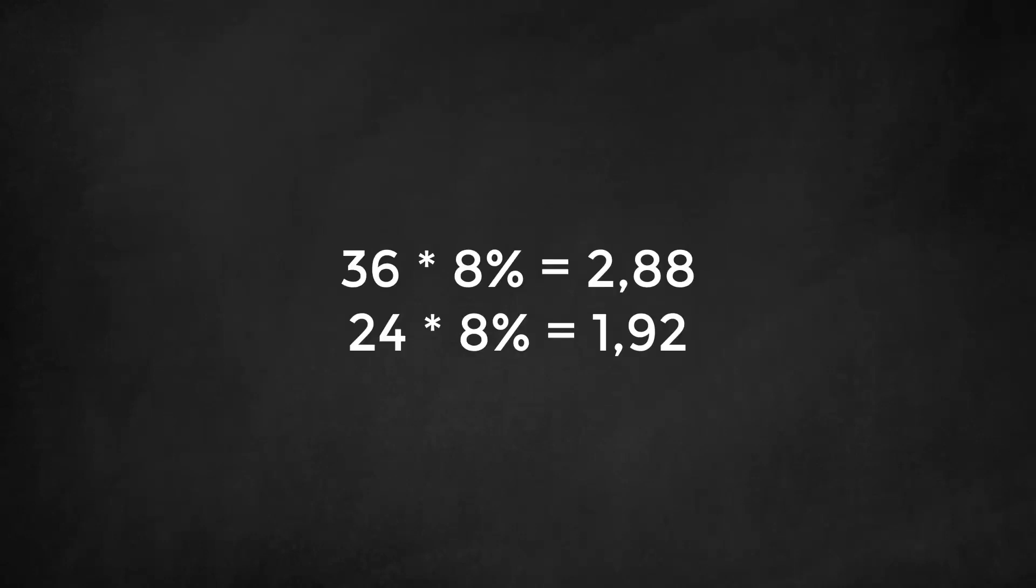The capital charge for the bank is a percentage against this sum and was set at 8% originally. So, the 36 and 24 found for our basic indicator and standardized approach would, at this 8% rate, lead to an actual capital claim of 2.88 and 1.92, respectively.